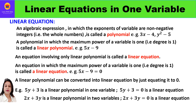First, what is a polynomial? An algebraic expression in which the exponents of the variable are non-negative integers, that is whole numbers, is called a polynomial. For example, 3x minus 4 is an algebraic expression where x has power 1, which is a non-negative integer, so it is a polynomial. Similarly, y squared minus 5y is a polynomial because the exponent 2 is non-negative.